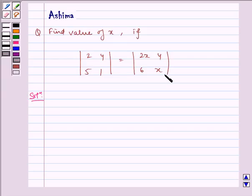Now let us write the solution. Given to us is determinant |2 4; 5 1| equals determinant |2x 4; 6 x| and we have to find the value of x.